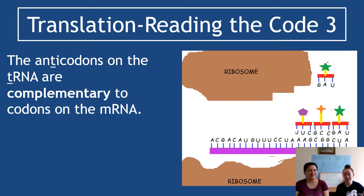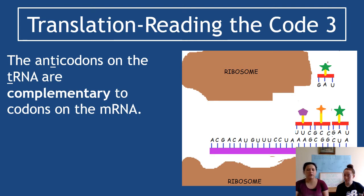The anticodons on the tRNA are complementary to the codons on the mRNA — they line up in a complementary relationship. Remember: RNA — whether tRNA, mRNA, or rRNA — does not contain thymine; instead it has uracil, which pairs with adenine. Everything lines up in a complementary way, and we start to see a growing peptide chain, as amino acids begin to line up next to each other. The tRNA helps choose the order of amino acids based on the mRNA, which is based on the DNA.